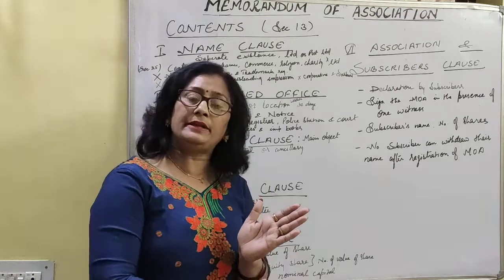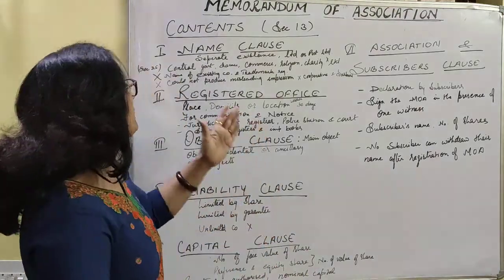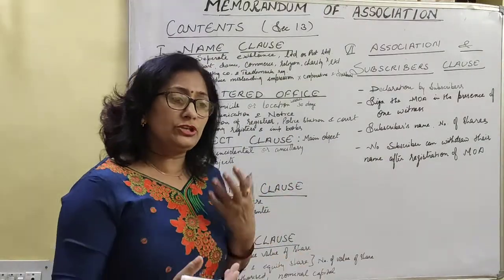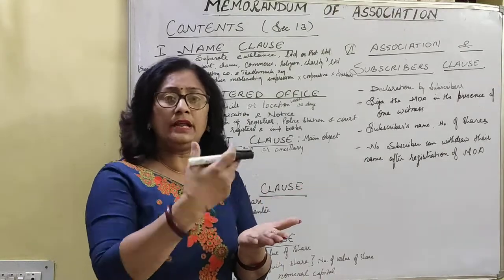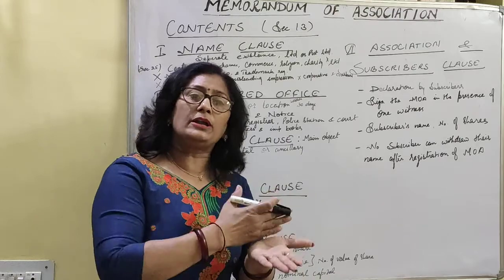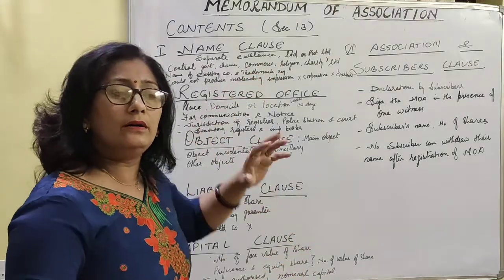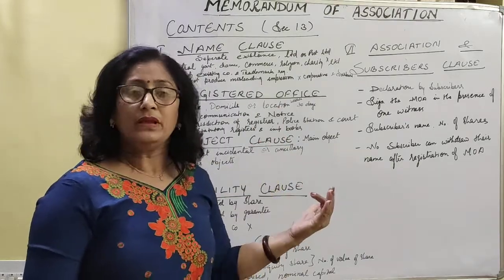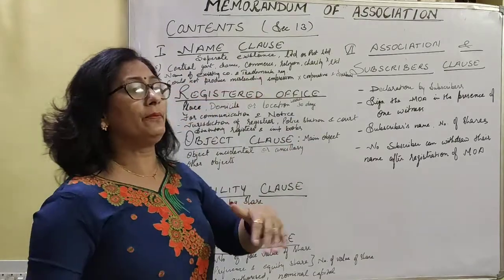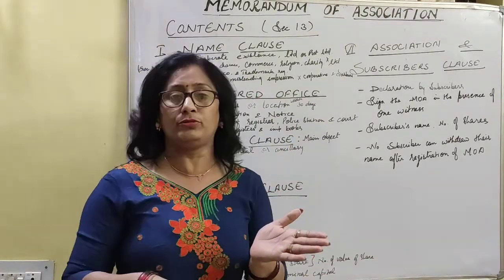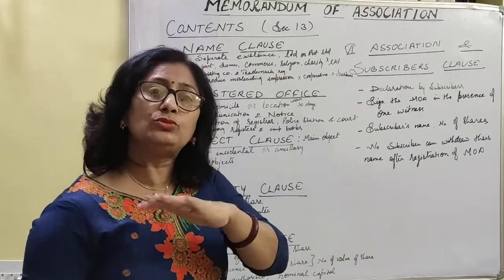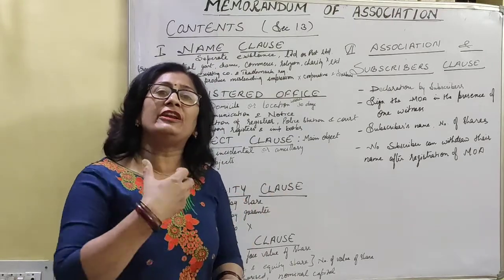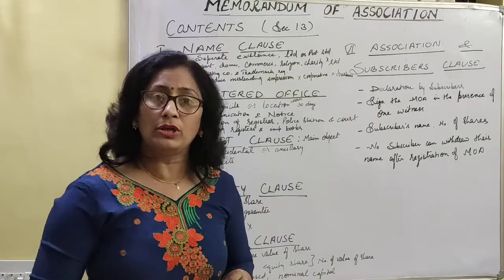If it is limited by guarantee, that should also be mentioned. Every private or public company must write 'Private Limited' after the name in case of a private company, and 'Limited' in case of a public company. Whatever name you decide, it should not resemble or be related to an existing company. The existing company or its trademark should not be resembled to yours. Even the phonetics you are using should not be the same.